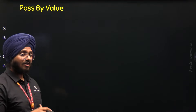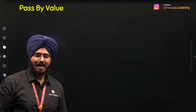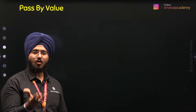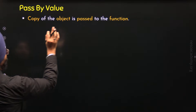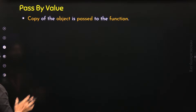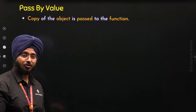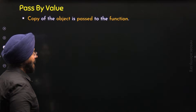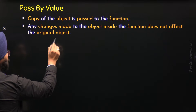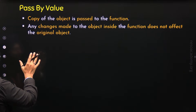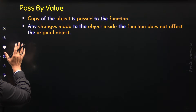Pass by value occurs when we pass the name of the object to a specific function as an argument, and in the receiving end we also have an object. In case of pass by value, we pass the copy of the object to a specific function. Whatever changes we make to the object inside the function does not affect the original object, because we pass the copy, not the original object.